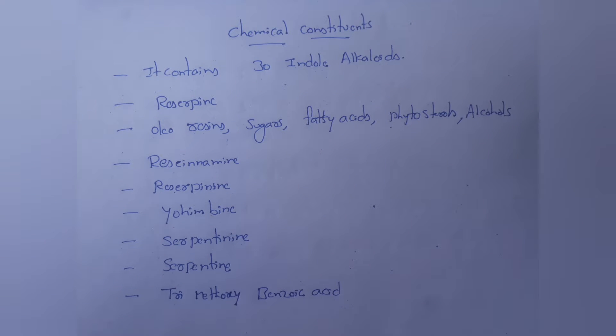Chemical constituents: Rauvolfia mainly contains 30 indole alkaloids. The important alkaloid of Rauvolfia is Reserpine. Major alkaloids are concentrated in the bark region of the root. Apart from Reserpine, Rauvolfia also contains some compounds like oleoresins,